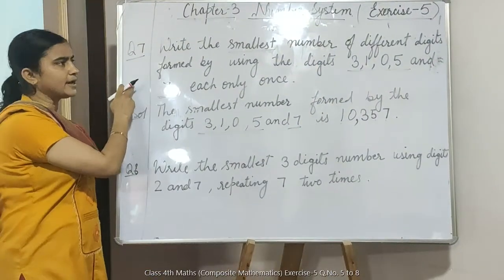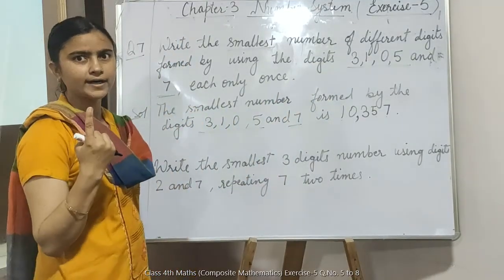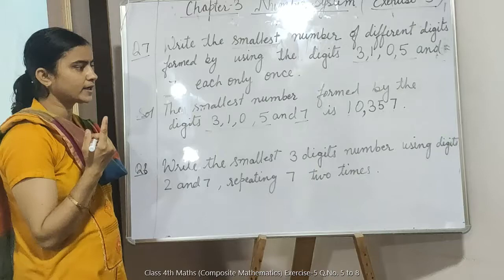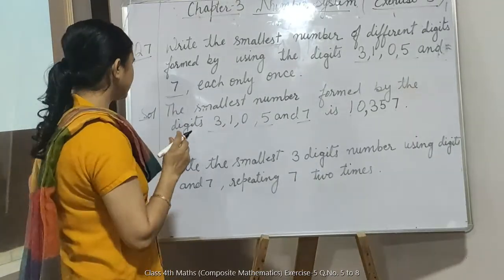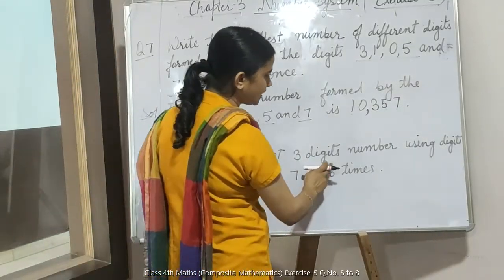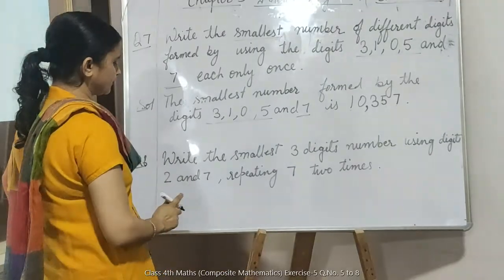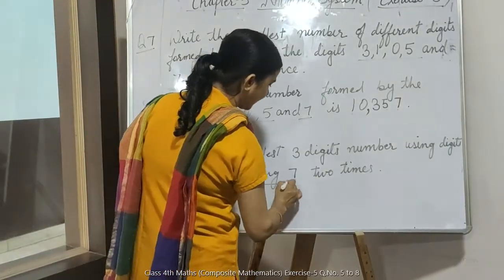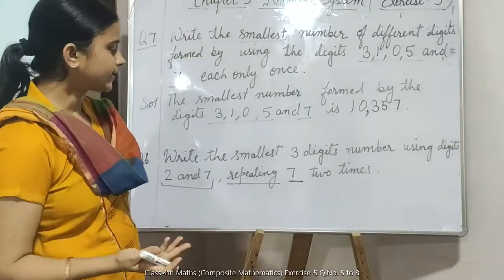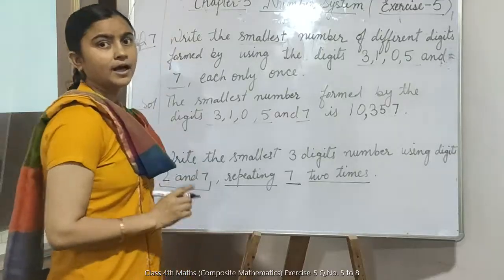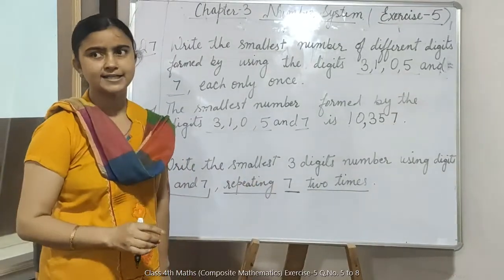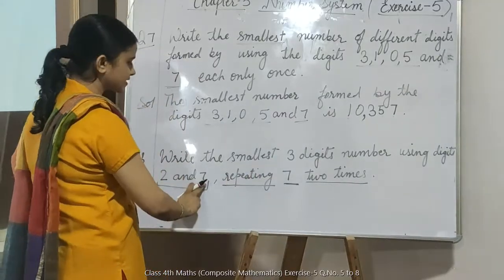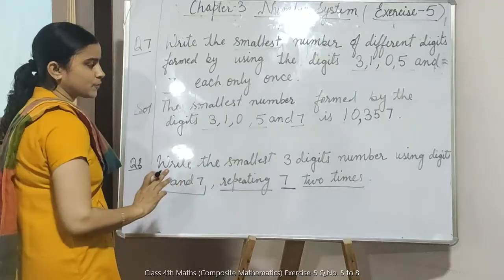Question number 5, 6, 7 में आपने सभी digits को एक बार use किया है। Question number 8 में जो digit दी हुई है, उसमें एक digit को 2 times use करना है। देखें: write the smallest 3-digit number using digits 2 and 7, repeating 7 — यानि 2 digits दी हुई हैं और 7 को 2 times repeat करना है, जिससे 3 digits बन जाएंगे।